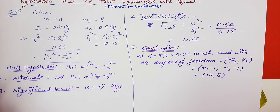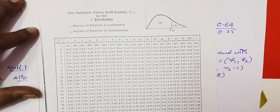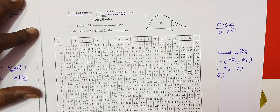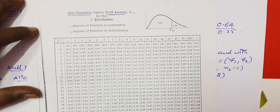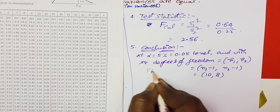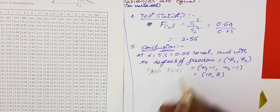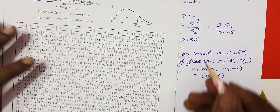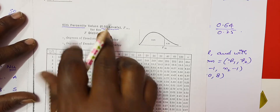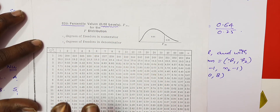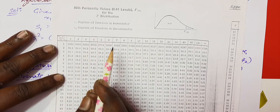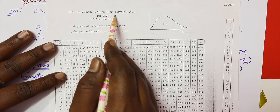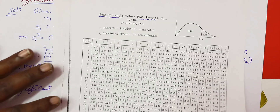There are two separate F distribution tables: one for the 0.01 level and one for the 0.05 level. Since the problem states 1% or 0.01 level significance, we use the appropriate table. The F distribution table has 95th percentile values at the 0.05 level and separate values at the 0.01 level.